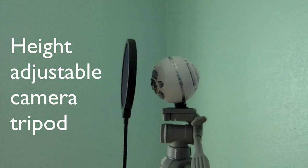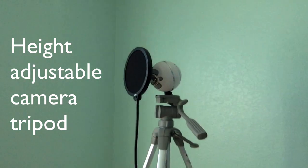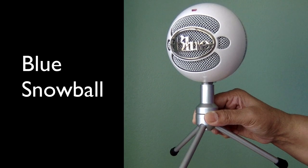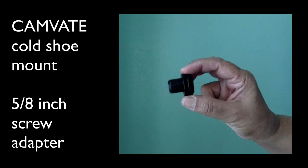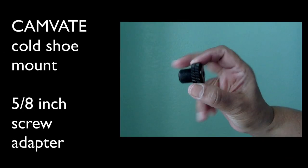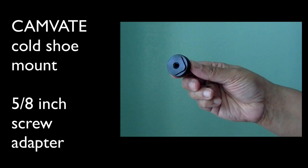In this video, I'm going to show you how to attach a Blue Snowball microphone to a camera tripod. It's very simple. All you need is a Camvate cold shoe mount with a 5/8 inch screw adapter.